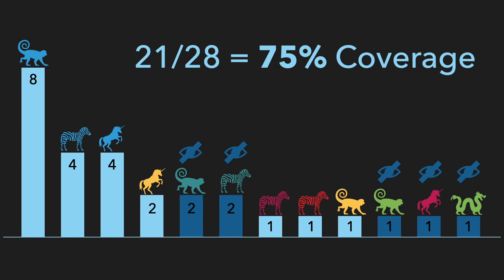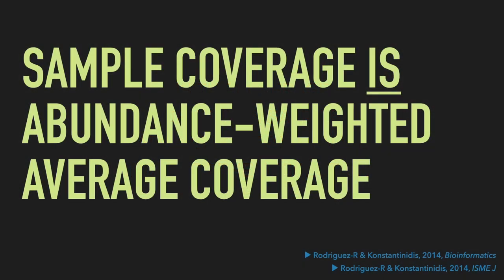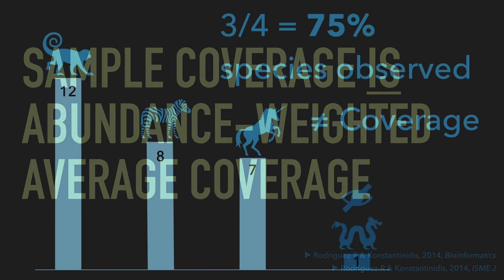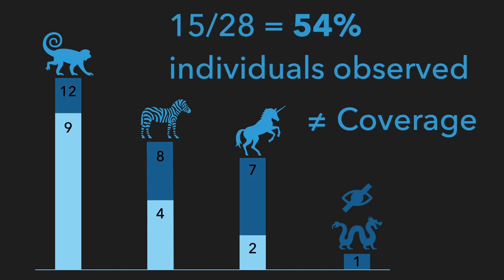Think about the consequences of increasing or decreasing resolution. Is the coverage of a given sample always lower when we increase resolution? Pause the video, ponder for a moment, and discuss your conclusions. We also have to note that sample coverage is abundance-weighted average coverage. For example, we observed 3 out of 4 species, or 75% species observed — this is not the sample coverage, but it's sometimes also reported and it's very important for some applications. Similarly, we have sampled 15 out of 28 individuals, or 54% individuals observed. Again, this is not sample coverage, but it's also important for some applications, such as census data.